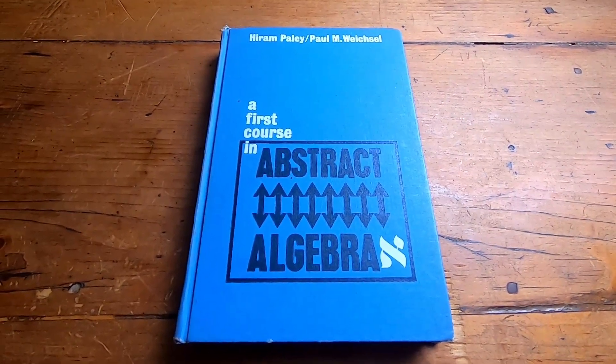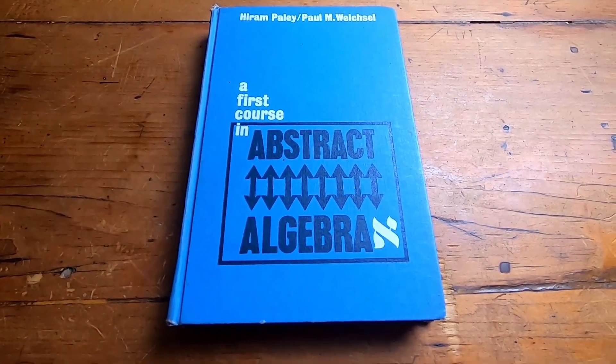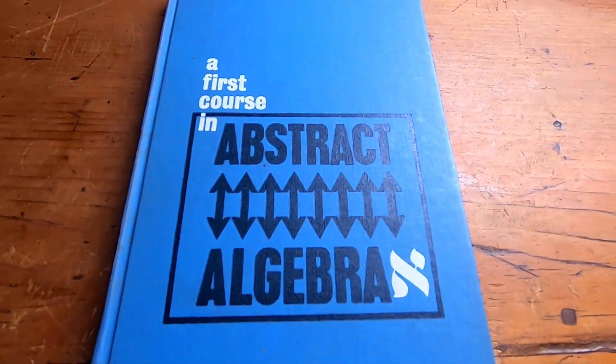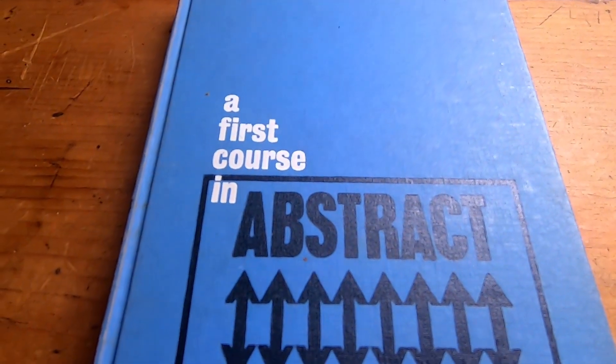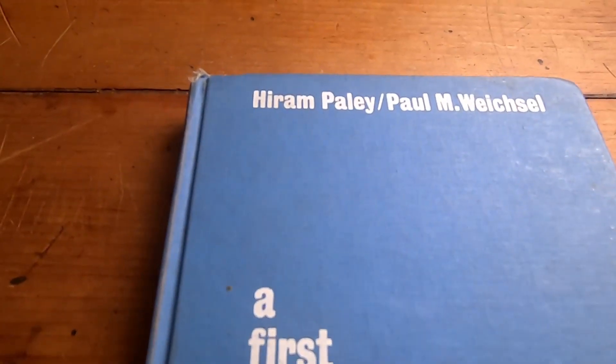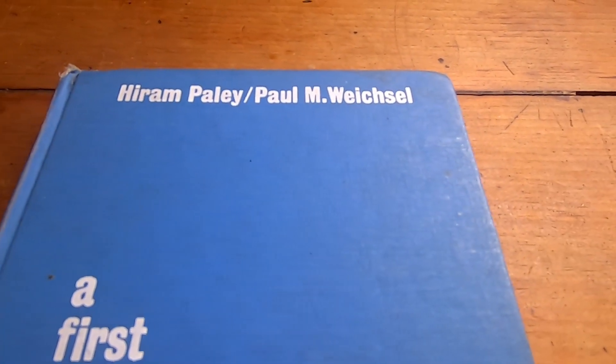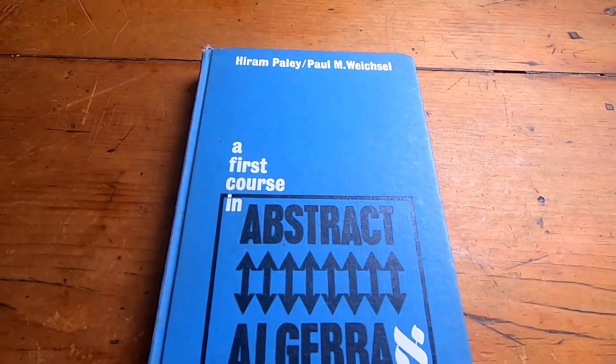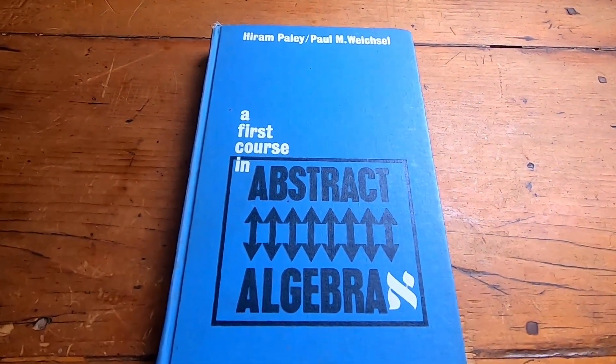In this video, I want to go over an extremely good book on abstract algebra. This is not really a popular book, and you've probably never heard of this book. It's called A First Course in Abstract Algebra, and it's written by Hiram Paley and Paul Weichsel. I picked up this book several years ago, and I used it extensively. Let's take a look inside this awesome book.